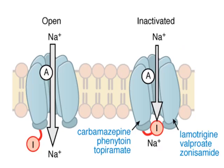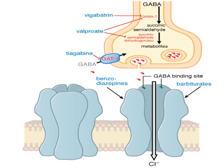This is the open sodium channel and this is the inactivated sodium channel. Carbamazepine, phenytoin, and topiramate act on these channels. Benzodiazepines cause increased frequency of chloride channel opening. In contrast, barbiturates cause increased duration of chloride channel opening, and ultimately cause hyperpolarization and relaxation of cerebral neurons.